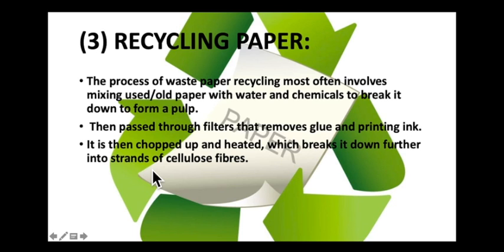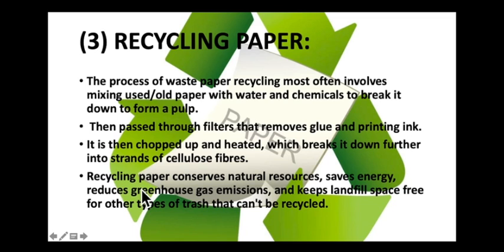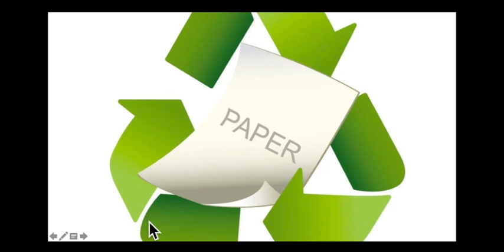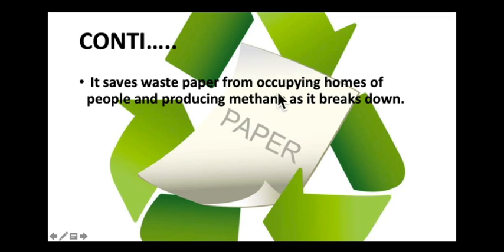This leaves clean cellulose fibre which can be made into new newspaper. Recycling paper does reduce the number of trees that have to be cut down to make new paper, but in fact most paper mills use trees that are specially grown for the purpose, and each time some are cut down new ones are planted to replace them. The main advantage of recycling paper is that it causes less water and land pollution than making new paper, and it also uses less energy. Recycling paper conserves natural resources, saves energy, reduces greenhouse gas emissions, and keeps landfill space free. It also saves waste paper from occupying homes and producing methane as it breaks down.